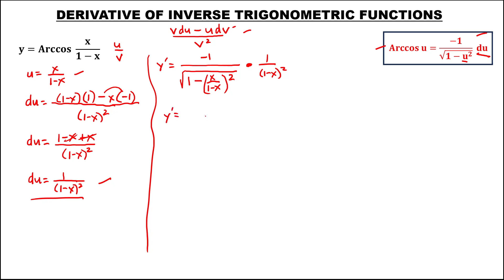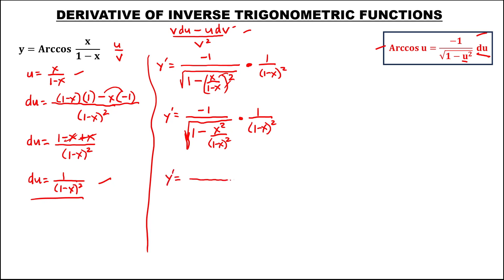Then to simplify, y prime equals negative 1 over the square root of 1 minus — distribute this exponent — this becomes x squared over 1 minus x, to the power 2, then times 1 over 1 minus x, quantity to the power 2. For this denominator, we can use the butterfly method — multiply — so we have 1 minus x, quantity to the power 2, minus x squared, then over 1 minus x, quantity to the power 2, then times 1 over 1 minus x, quantity to the power 2.